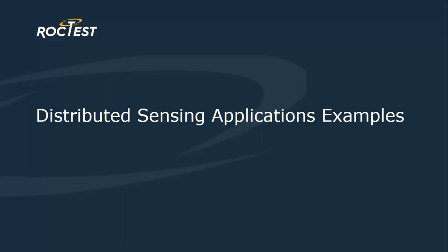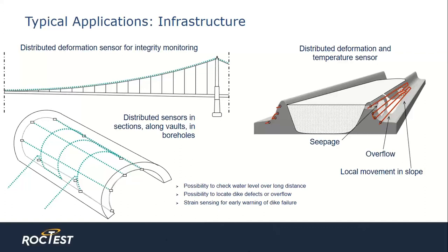We'll discuss some application examples now. In this graphic, you can see some typical applications for distributed sensing. At the top left is an example of integrity monitoring along a bridge suspension cable. Also possible are monitoring of the bridge deck and tower for deformation, and strain monitoring in the vertical cable stays. Moving clockwise is a canal or levee being monitored for physical deformation, seepage, and overflow. And at the bottom left, a tunnel being monitored for wall deformation and leak detection.